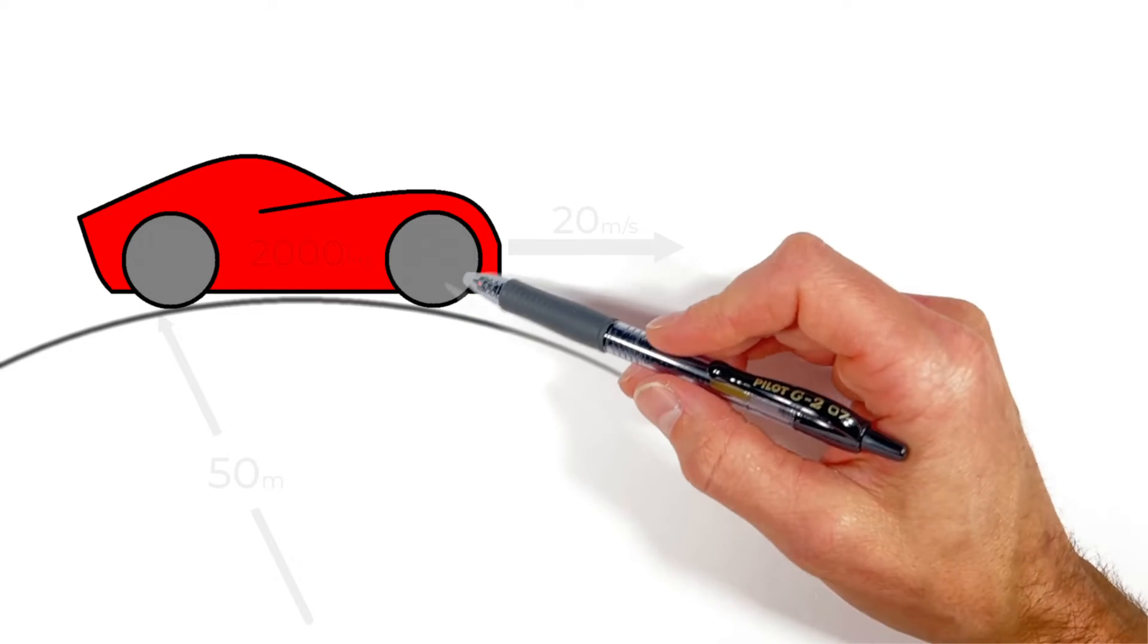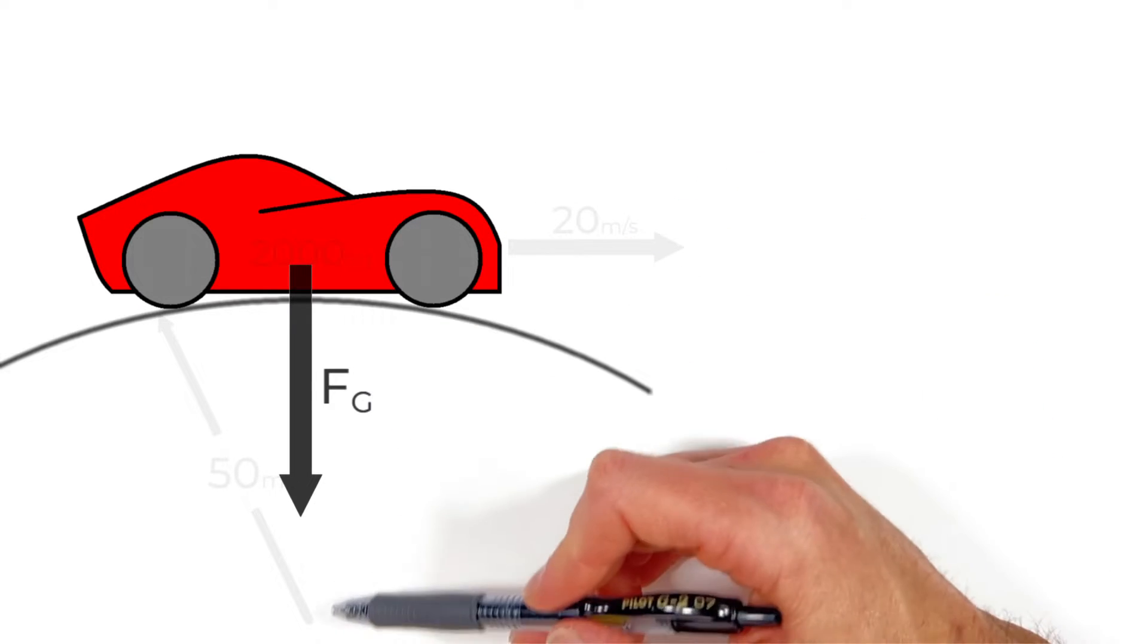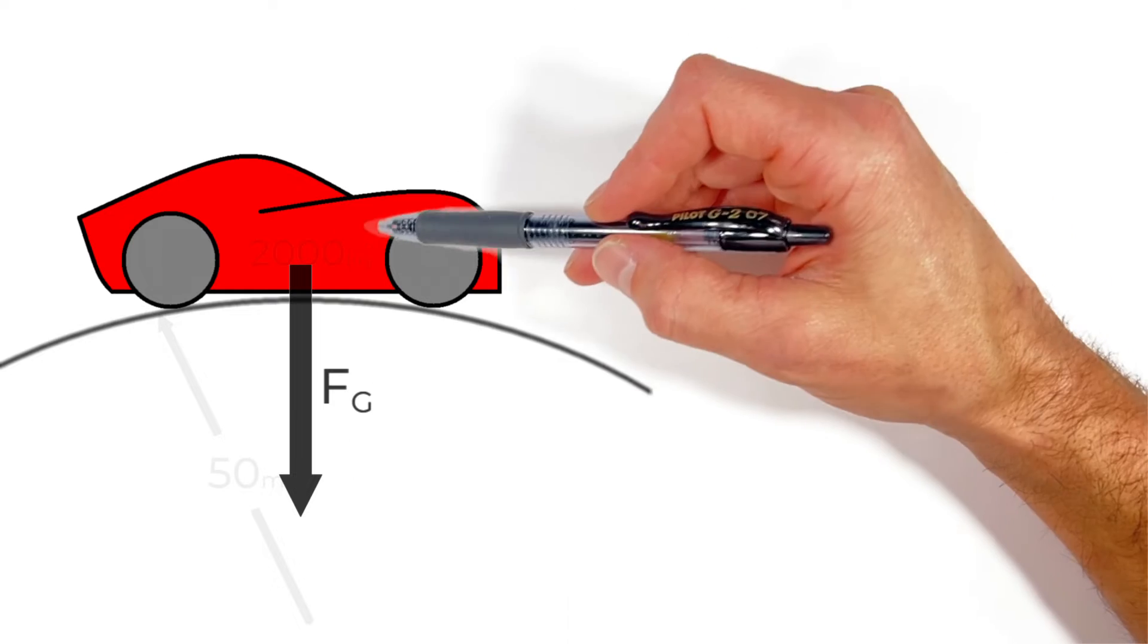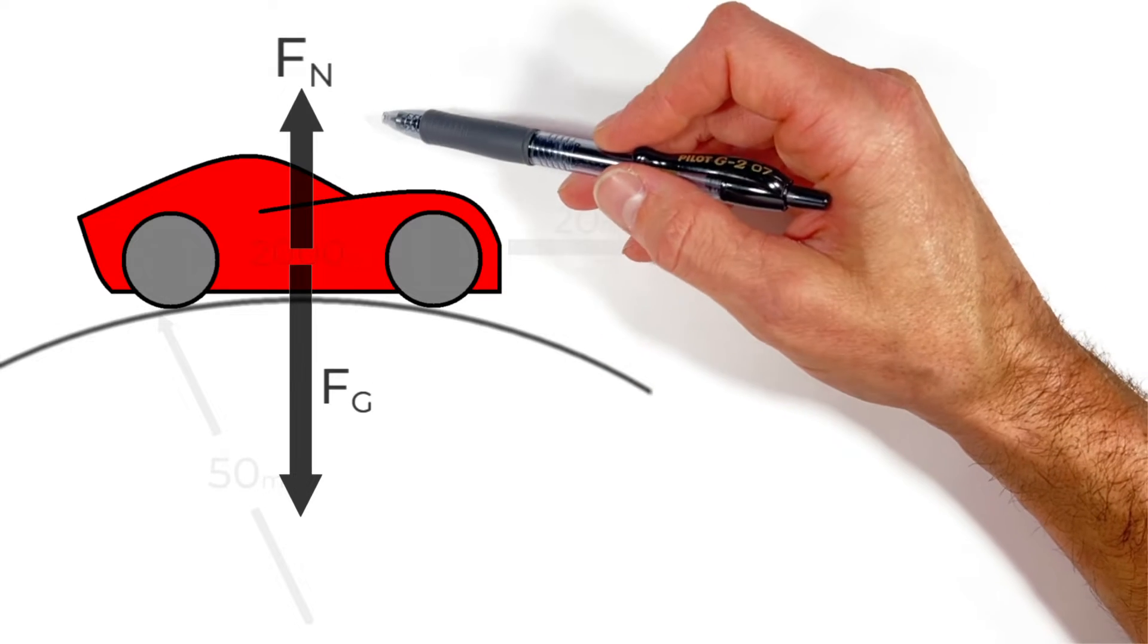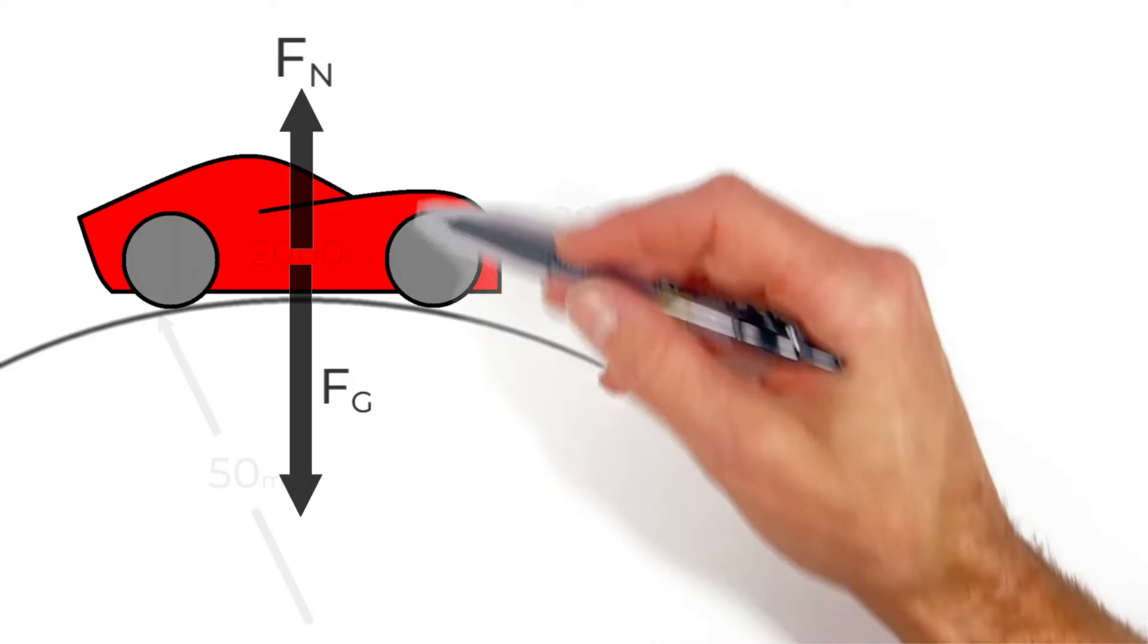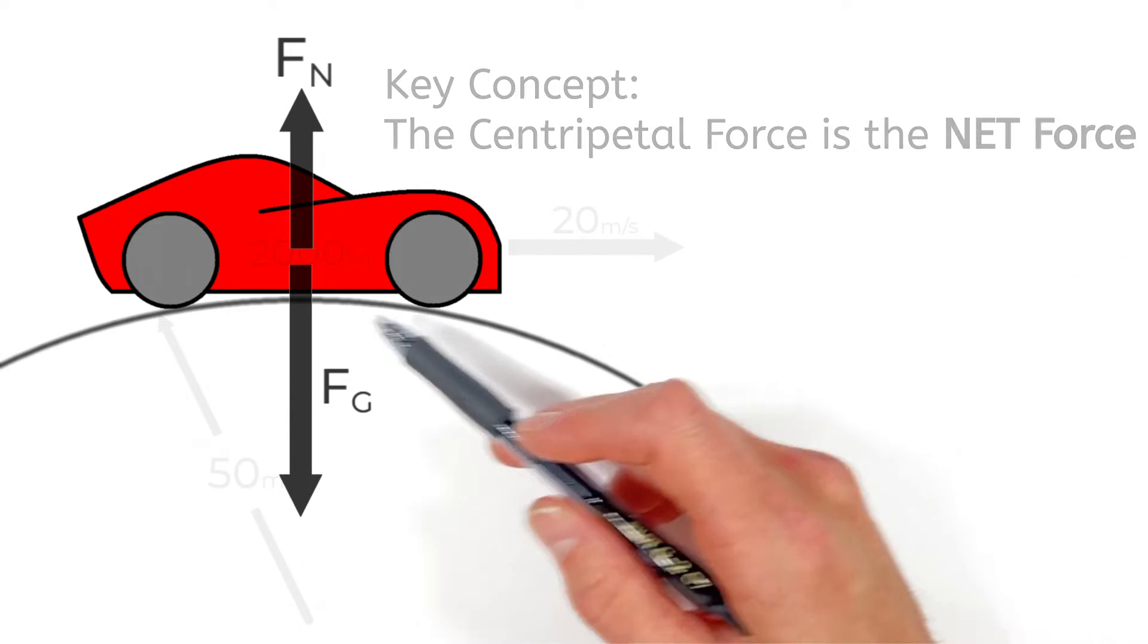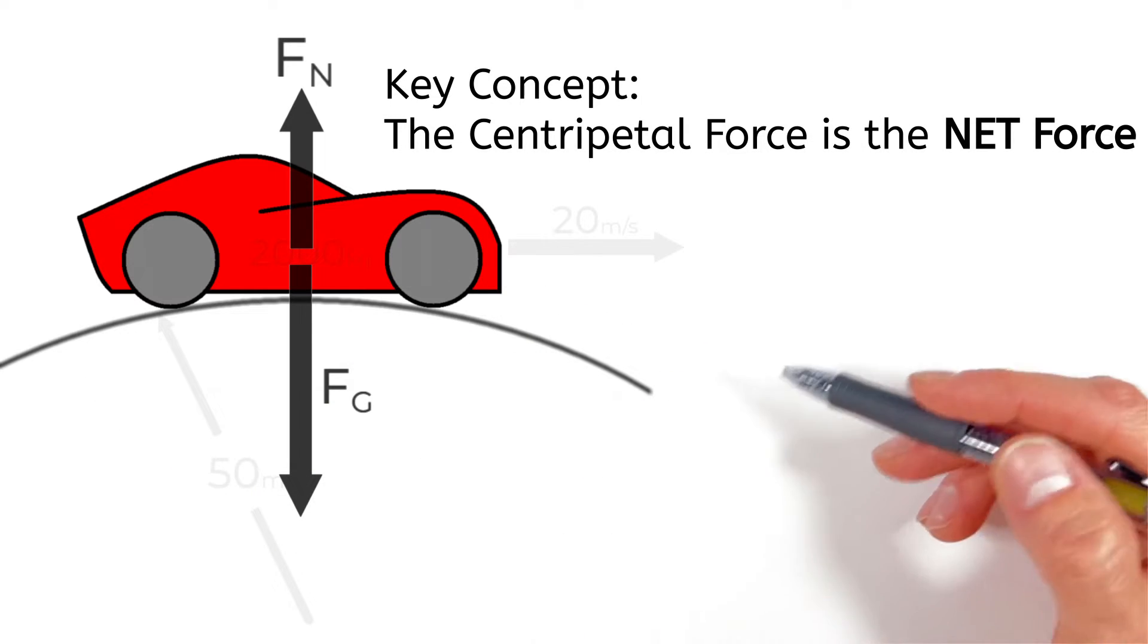Looking at the free body diagram on this car there's a force downward by gravity acting toward the center of the circle and then there's the force upward by the normal force really the hill holding up the car. And so those two forces combining are really competing with each other that provide this centripetal force on this car that makes it move in a circle.